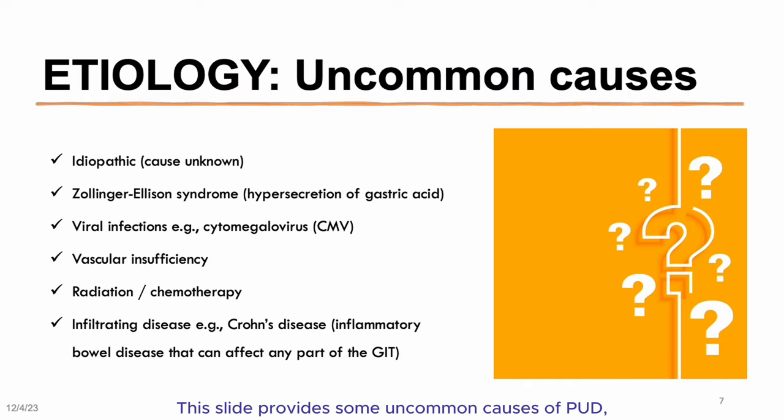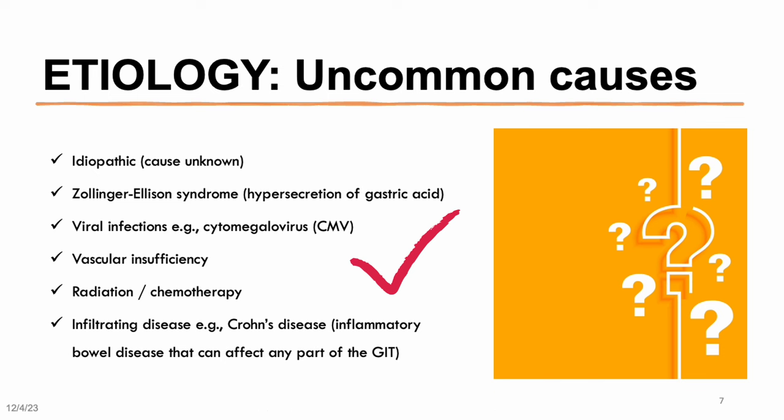There are also uncommon causes of peptic ulcer disease, including vascular insufficiency, chemotherapy, and infiltrating diseases like Crohn's disease.